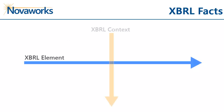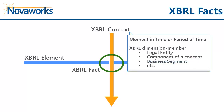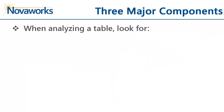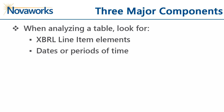XBRL facts are created at the intersection of an XBRL element and a context. Context represents a moment in time or a period of time, but can have additional components represented by XBRL dimensional elements and members. These additional components might be a legal entity, a component of an accounting concept like equity, or any number of other items. So the major things we need to look for when analyzing each table are: XBRL line item elements, dates and periods of time, and XBRL member elements.